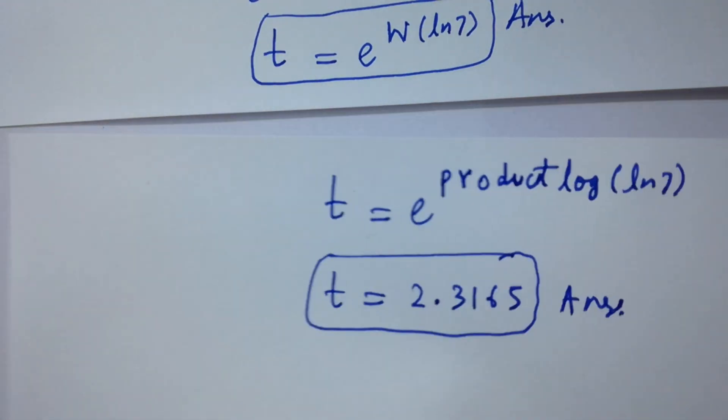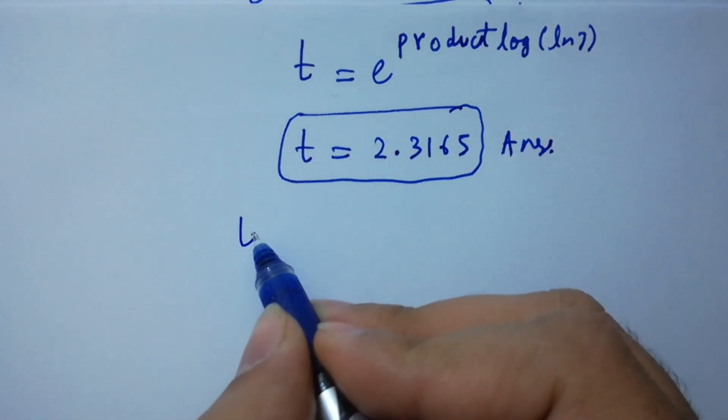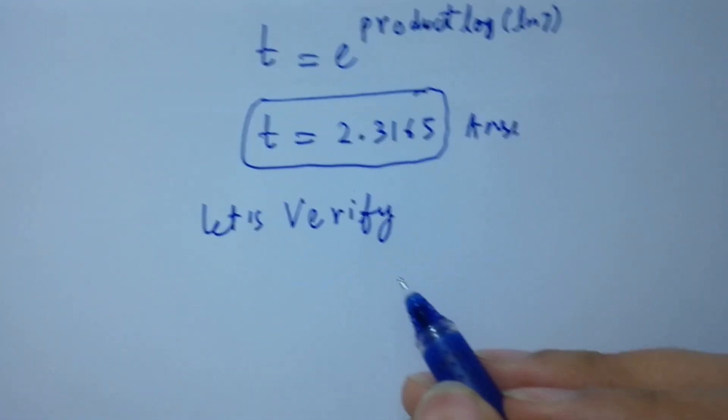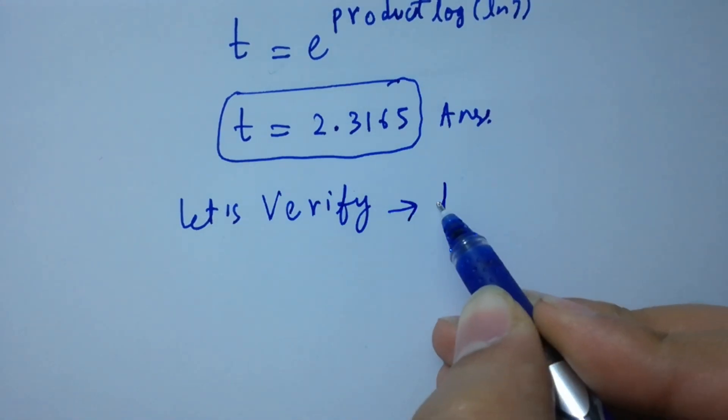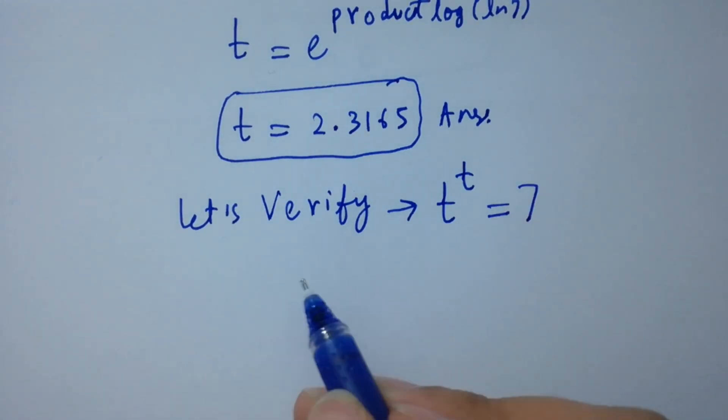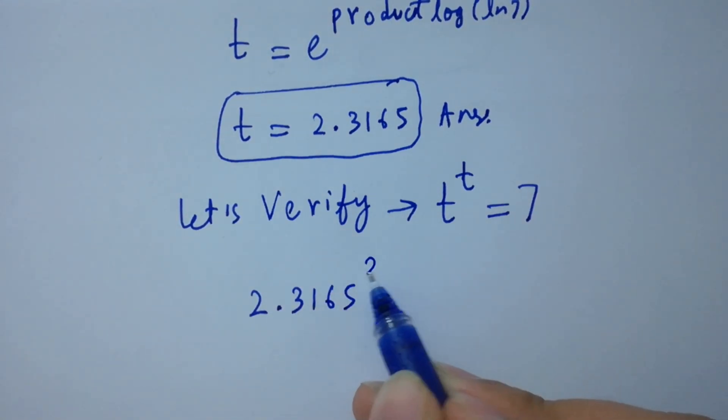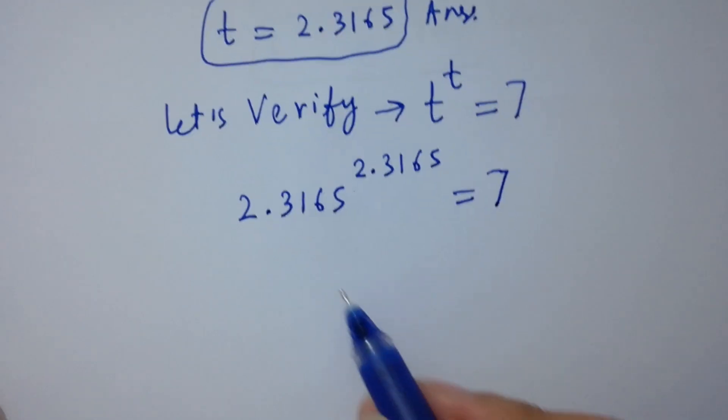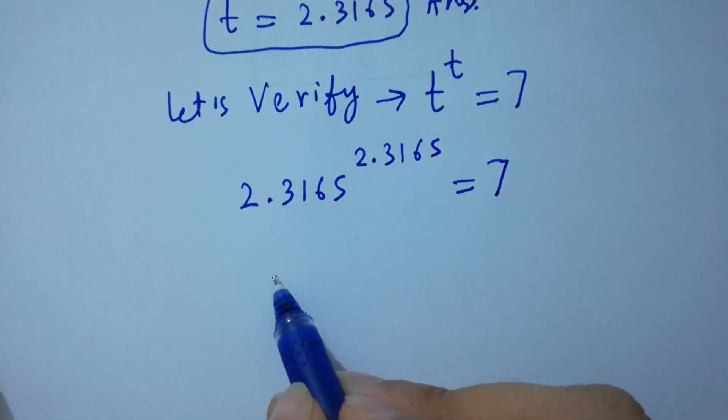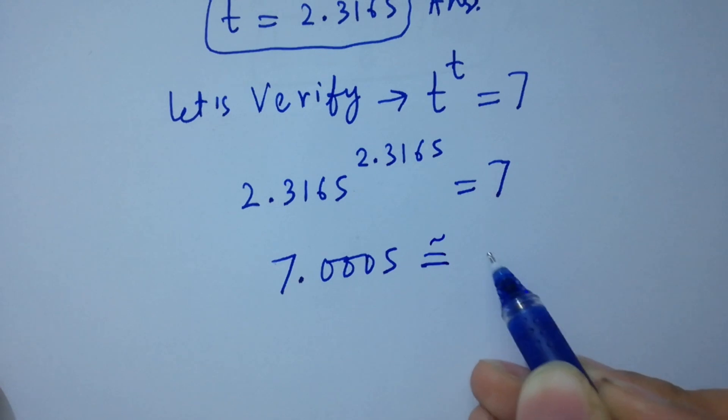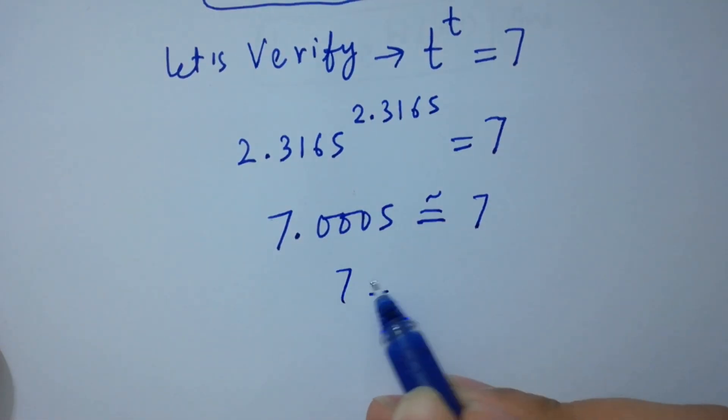Now let's verify: t to the power t equals 7. T is 2.3165 to the power 2.3165 equals 7. This equals 7.0005 which is approximately equal to 7. Left-hand side equals right-hand side.